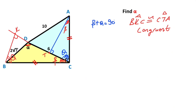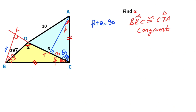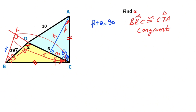Triangle BKC and triangle CTA are congruent. Congruent triangles have the same sides and angles. So let's call here M. If there is M units on one side, then h minus 6 is left here, and here is 6 minus m.